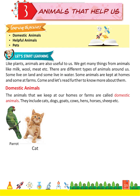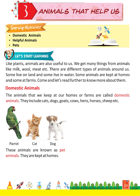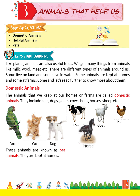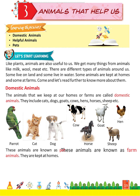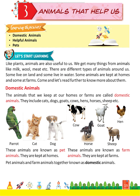Parrot, cat, dog — these animals are known as pet animals. They are kept at homes. Cow, goat, hen, horse, sheep — these animals are known as farm animals. They are kept at farms. Pet animals and farm animals together are known as domestic animals.